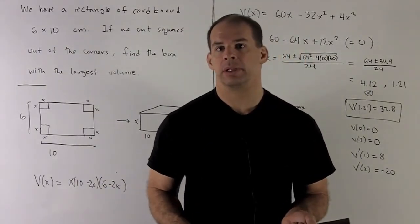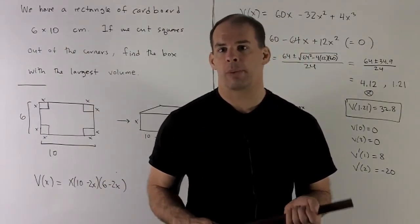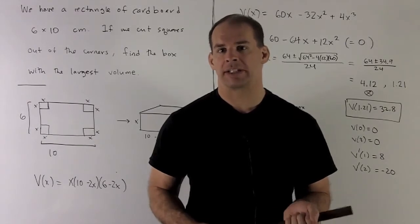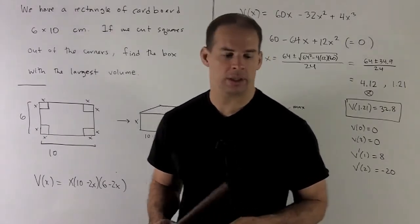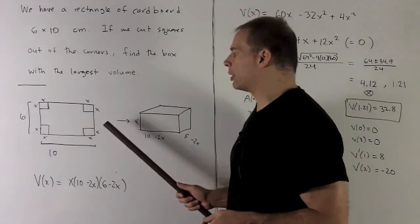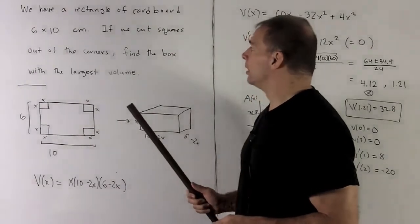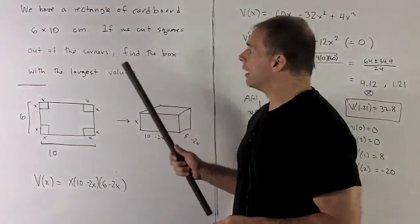Another optimization problem. We're going to form a cardboard box from a rectangular piece of cardboard. The dimensions of our piece of cardboard are going to be six by ten. I'm going to take a square out of each corner.